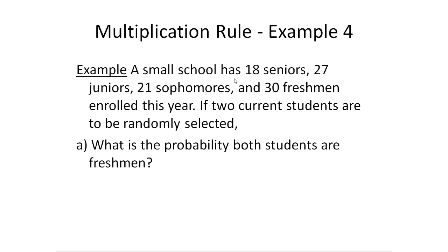We're told a small school has 18 seniors, 27 juniors, 21 sophomores, and 30 freshmen, and we're going to randomly select two current students. It's implied we're going to select them without replacement — nothing here implies we're going to pick a student, put them back, and then pick again. Usually you're looking for that phrase 'without replacement,' but sometimes it's implied like in this example.